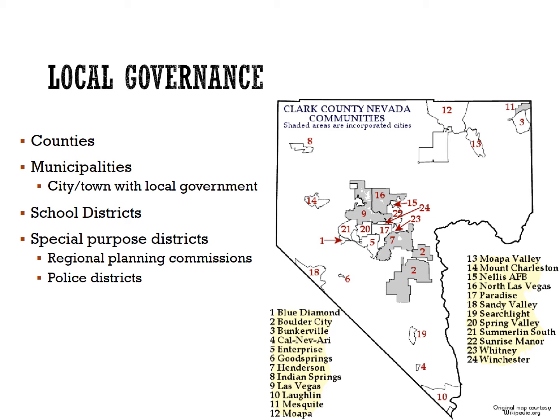Continuing to change the scale of governance, we now look at the local level — entities such as counties, municipalities, school districts, and regional planning commissions. Because the United States has a federal system, there are often overlapping levels of government. For example, the city of Las Vegas has certain authority, but other powers are delegated to the Clark County commissioners. Both are superseded by Nevada's state government, which in turn is superseded by the sovereignty exercised by the federal government of the United States.